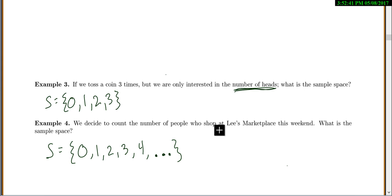If we wanted to count the number of people who shop at Lee's Marketplace this weekend, and we want to know the sample space, we could have zero people, one person, two people, three, or four. There really isn't a theoretical upper limit here, so we'll just have dot, dot, dot.